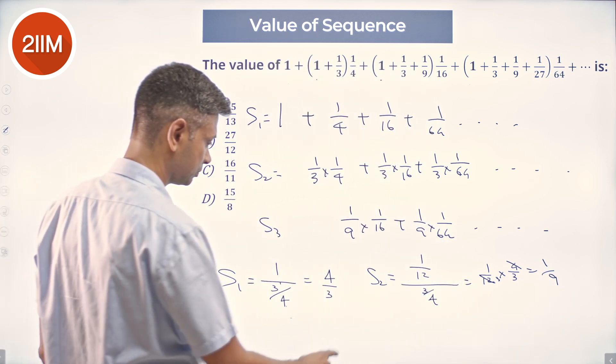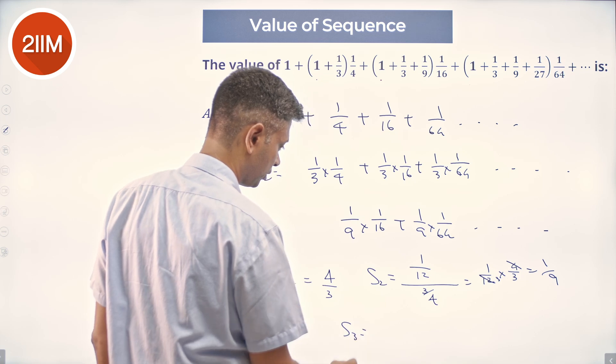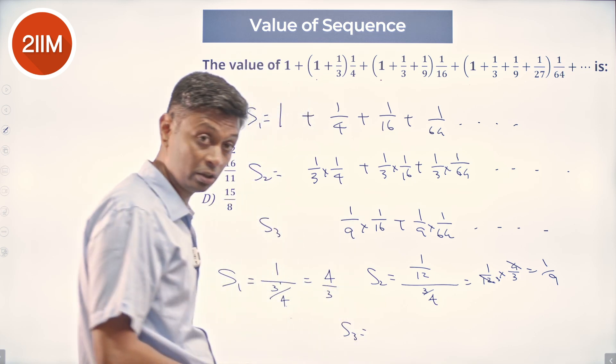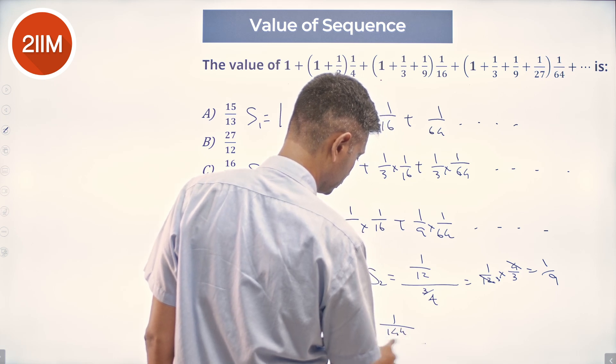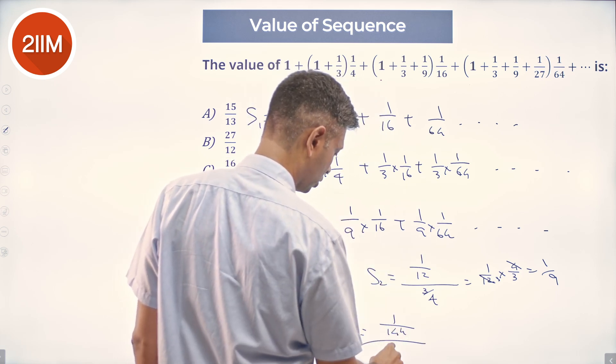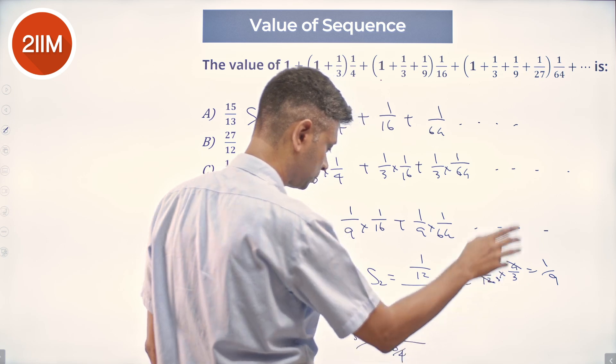The next term: the first term is 1/9 into 1/16, common ratio is again 1/4 by 3/4 and so on.